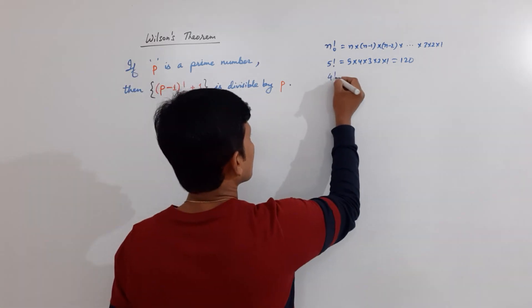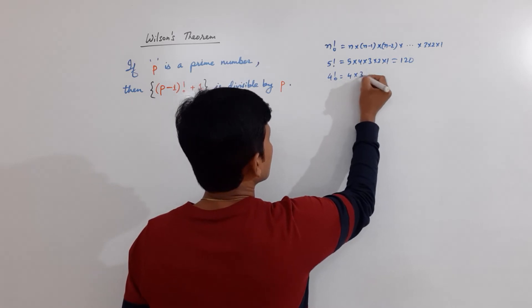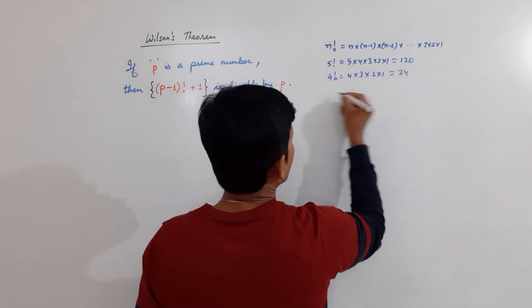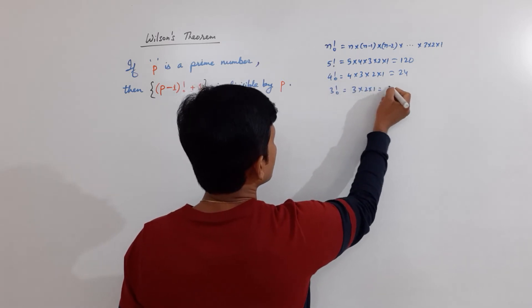If I go for factorial of 4, I have 4 times 3 times 2 times 1, which is equal to 24. For factorial of 3, it is 3 into 2 into 1, which is equal to 6.